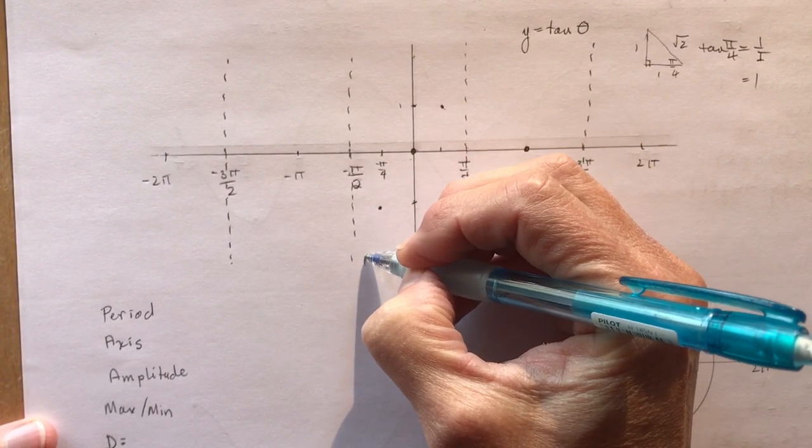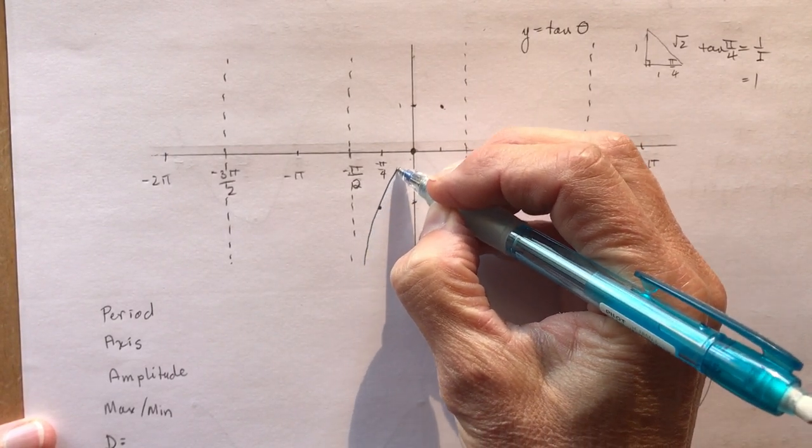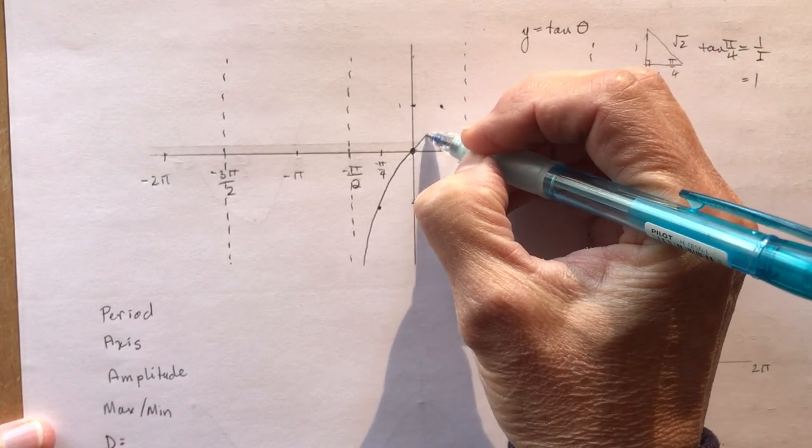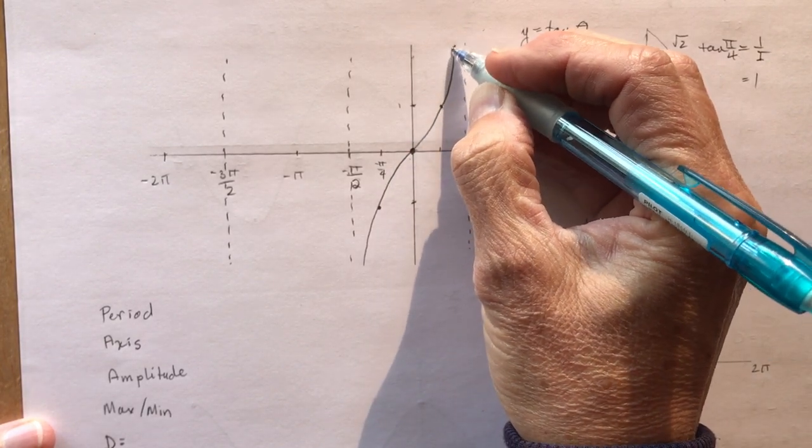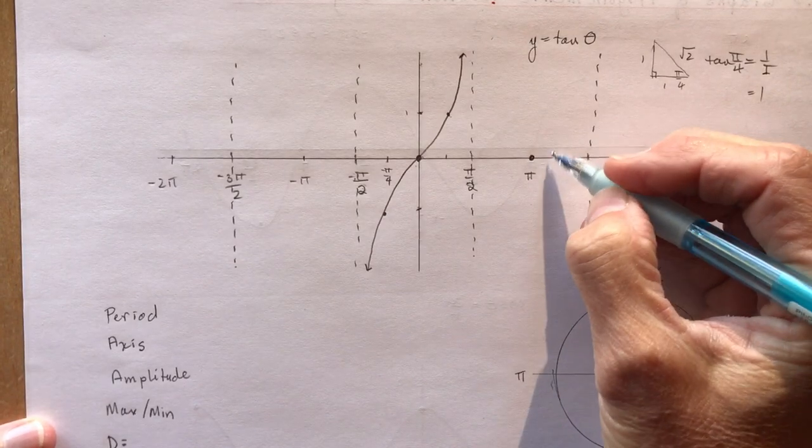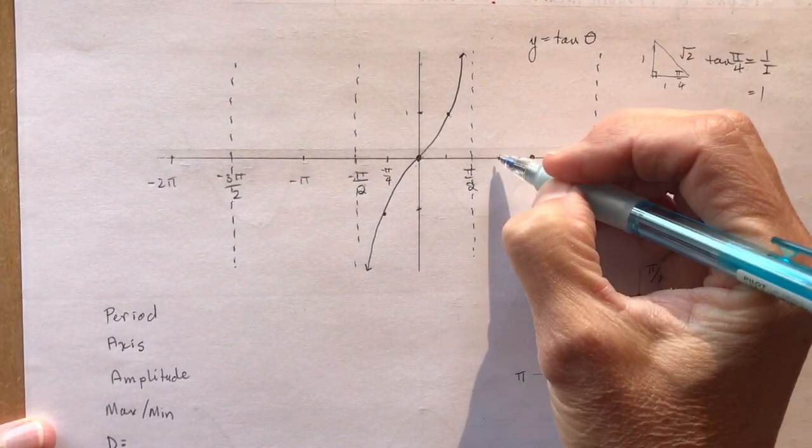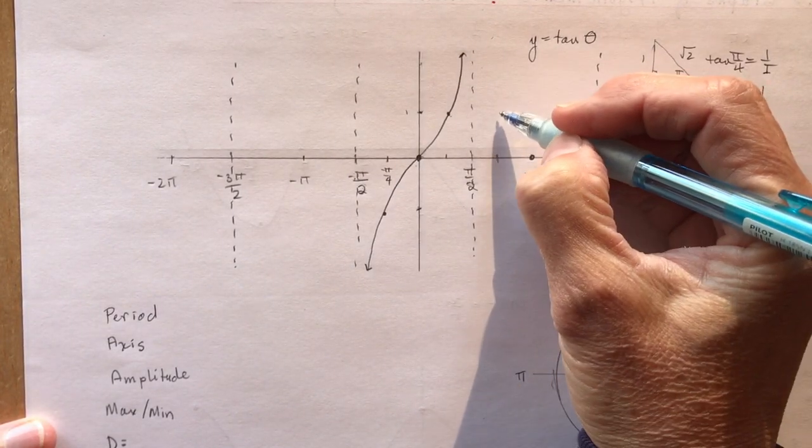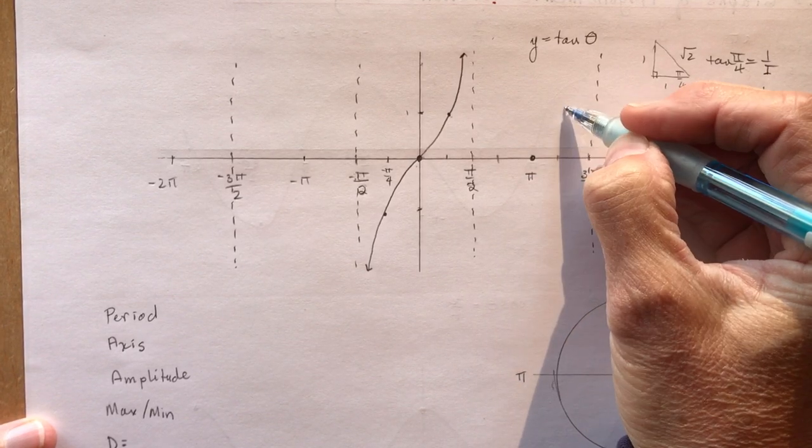So the function, the tan function, goes like this. It comes through here, and then it goes up like this. It's very pretty. And the same thing happens here. So these are the related acute angles where we also have 1 and minus 1.